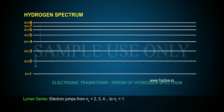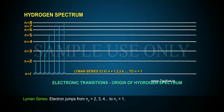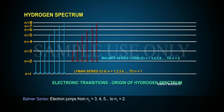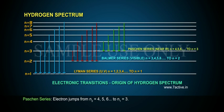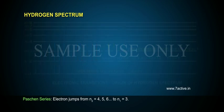Lyman Series: Electron jumps from N2 equal to 2, 3, 4, with N1 equal to 1. Balmer Series: Electron jumps from N2 equal to 3, 4, 5, with N1 equal to 2. Paschen Series: Electron jumps from N2 equal to 4, 5, 6, with N1 equal to 3.